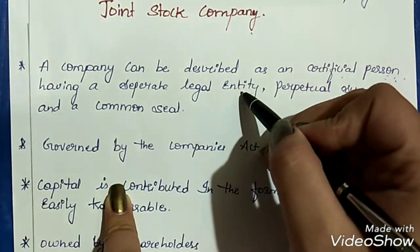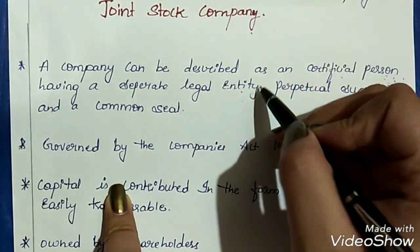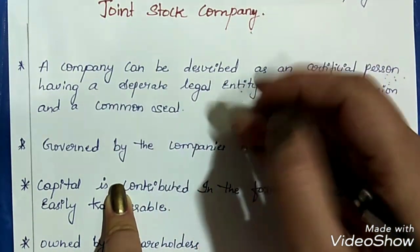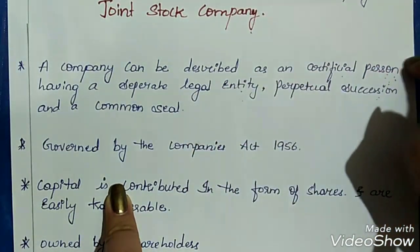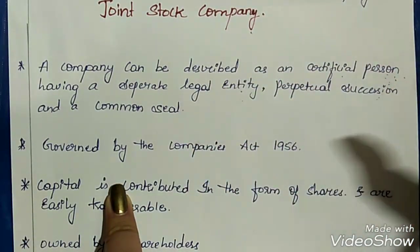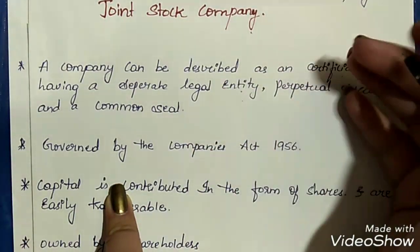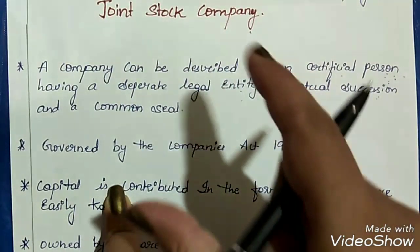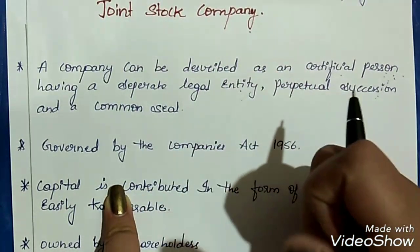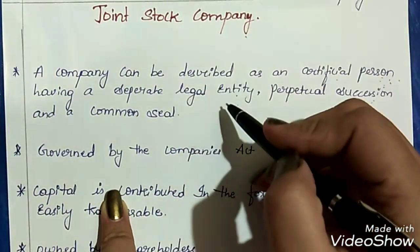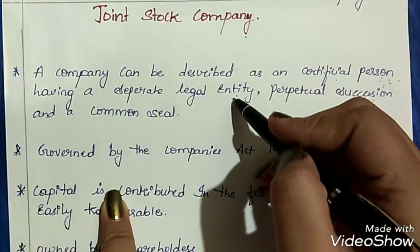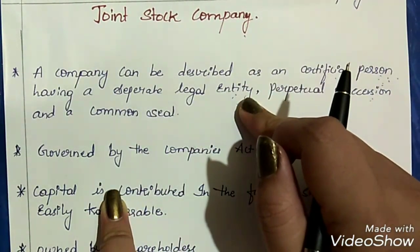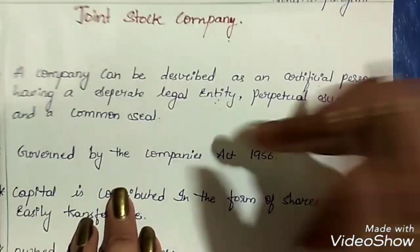The second aspect is having a separate legal entity. It has a separate legal entity, meaning it is not dependent upon the owners. Owners and the joint stock company are treated as two different entities. This company has its own existence, hence it has a separate legal entity.